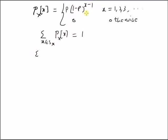By using the definition of the geometric distribution, we have the summation from x equals 1 to infinity of p times (1-p) to the power x minus 1, which equals p times the summation from x equals 1 to infinity of (1-p) to the power x minus 1.